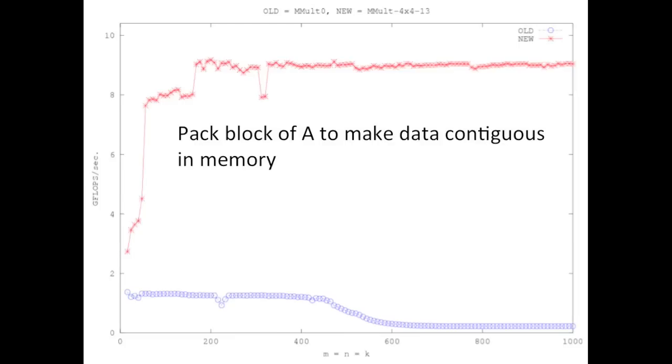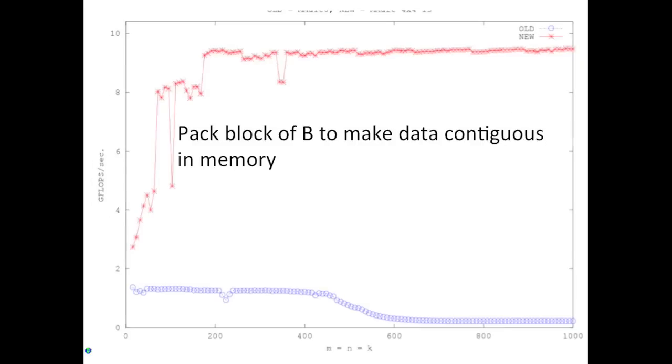So if you do that, you get even better performance. And if you then take that row panel of B that's being multiplied by the block of A, then you get better performance yet. And now we're looking at better than 90% of peak.